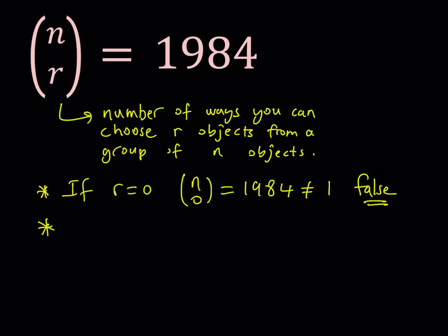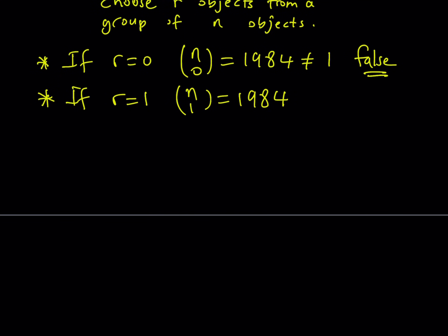The second case we're going to look at is if r is equal to 1. Then we get n choose 1 is equal to 1984. You have n objects — n marbles, n books, whatever — and you're going to choose one of them only. In how many ways can this be done? Well, obviously you can choose any one of these objects, and that could be done in n ways. So from here, we get n equals 1984. That is a valid solution because it satisfies the equation.